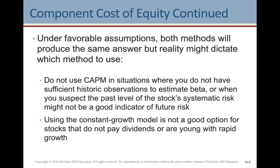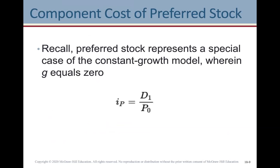As a young company with rapid growth matures, its growth rate isn't going to stay as high as it might be in the beginning. And if a stock isn't paying dividends, it's difficult to calculate growth. For the cost of preferred stock, we have a special case of the constant growth model where g equals zero, so the return on preferred stock equals dividend one for the preferred stock divided by P0, with growth equal to zero.